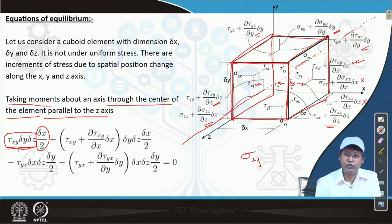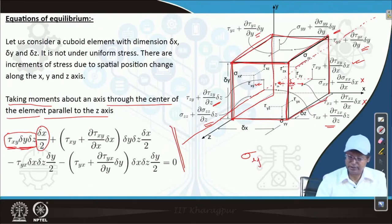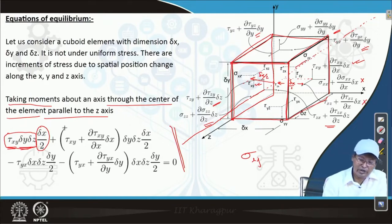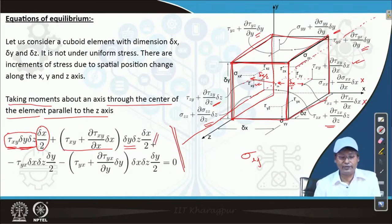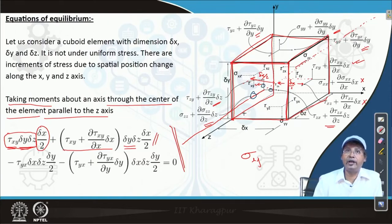Once we understand one component of this equation, all others follow easily. Note a small correction: on the y-plane the components should be tau_yx and tau_yz, not as written — please correct that copy-paste error. The component tau_yx times area (delta_x times delta_z) times arm (delta_y / 2) contributes a moment, and similarly for the other face.